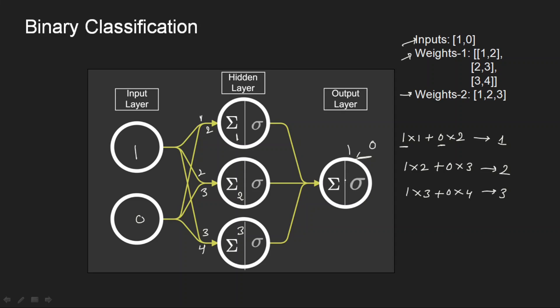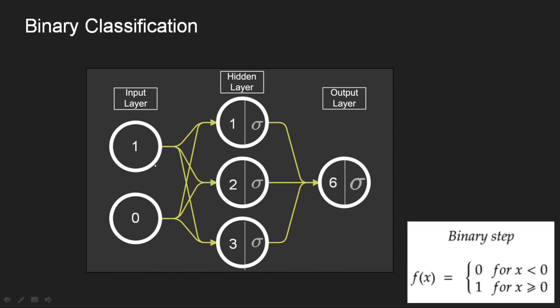This is how you calculate the weighted sum. Till here we already know. Now we need to apply an activation function on top of this. So if you see this is what we have got: 1, 2, and 3. Now I am applying a binary step function. So step function we already know, if it is less than 0 then it is 0, otherwise it is 1. So in our cases my values are greater than 1, so my outputs will be 1 here, 1 here, and 1 here.